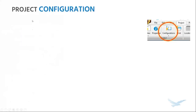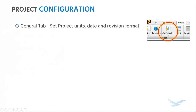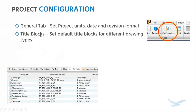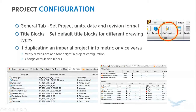A bulk of the work is going to happen in project configuration, which has about six or seven tabs. In the general tab, you're going to be setting up the project units, format for dates and revisions, among other things. In the title block tab, you will be setting up the default title block for different types of drawings — so if you mostly use B-size paper, when you create new schematics it should start with a B-size title block. It is possible to change the title blocks on a one-off basis, but good to set up these defaults. If you plan on duplicating an imperial project into a metric project or vice versa, take a closer look at dimensions and font height in project configuration — a one millimeter font in metric translates into one inch font in imperial. Make sure to relink to an appropriate title block.